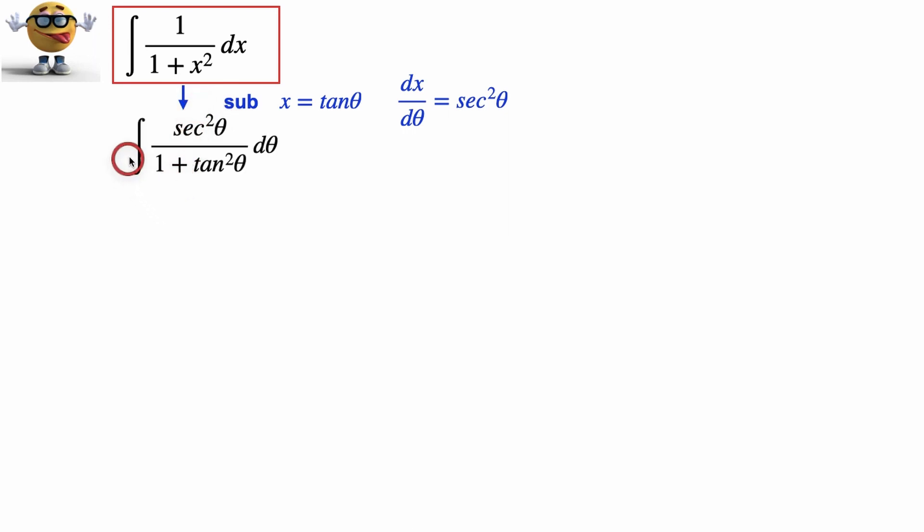So with that substitution, this becomes secant squared d theta divided by 1 plus tan squared theta, because if we solve for dx here, that would substitute in. Now we're going to invoke a popular trig identity: tan squared plus 1 equals secant squared.